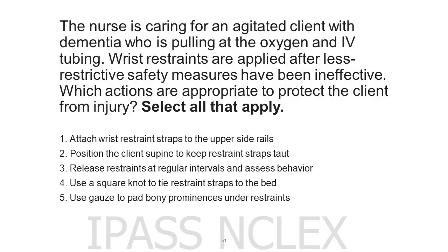The nurse is caring for an agitated client with dementia who is pulling at the oxygen and IV tubing. Wrist restraints are applied after less restrictive safety measures have been ineffective. Which actions are appropriate to protect the client from injury? Select all that apply. 1. Attach wrist restraint straps to the upper side rails. 2. Position the client supine to keep restraint straps taut. 3. Release restraints at regular intervals and assess behavior. 4. Use a square knot to tie restraint straps to the bed. 5. Use gauze to pad bony prominences under restraints.